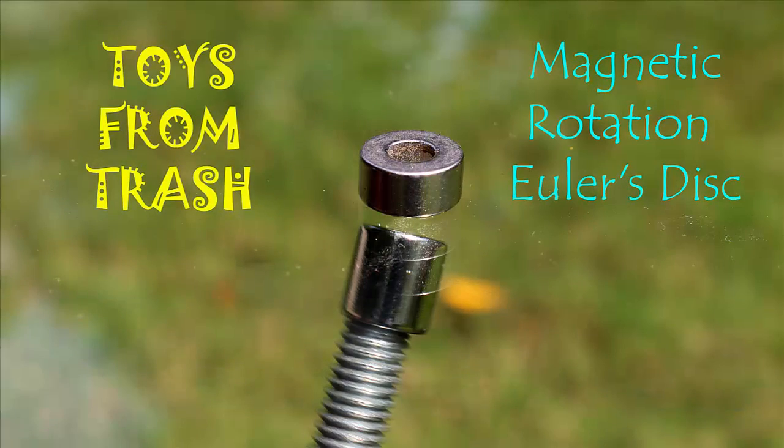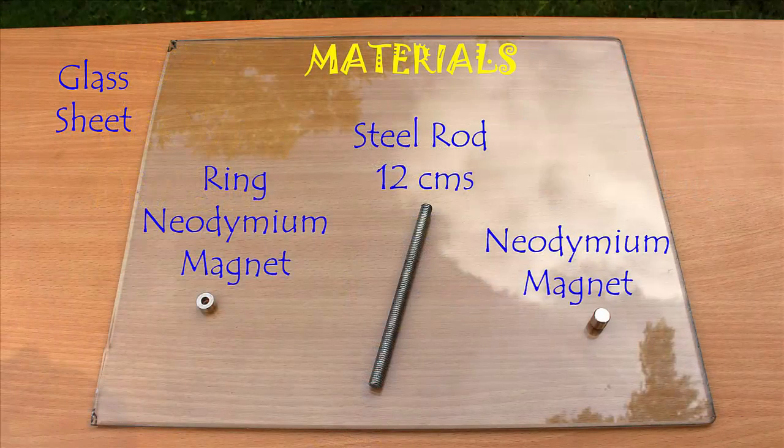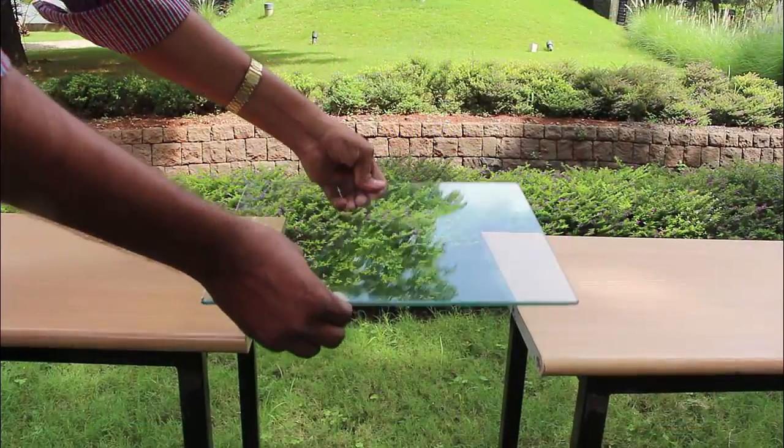For performing this very unusual experiment you need a glass sheet, a steel rod 12 cm, a ring neodymium magnet and a cylindrical magnet.